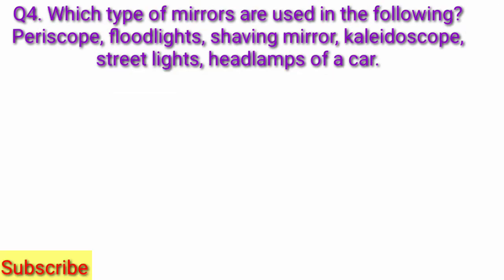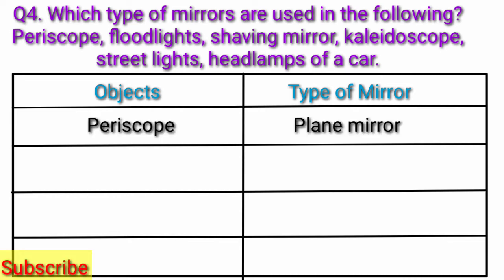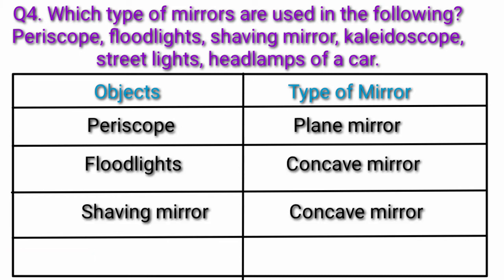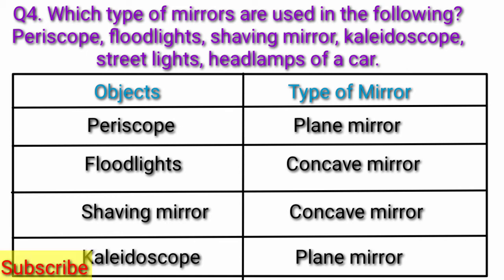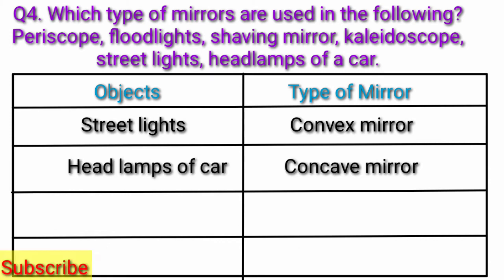Question 4: Which type of mirrors are used in the following? Periscope, Floodlights, Shaving Mirror, Kaleidoscope, Streetlights, Headlamps of a Car. Answer — Periscope: Plane Mirror; Floodlights: Concave Mirror; Shaving Mirror: Concave Mirror; Kaleidoscope: Plane Mirror; Streetlights: Convex Mirror; Headlamps of a Car: Concave Mirror.